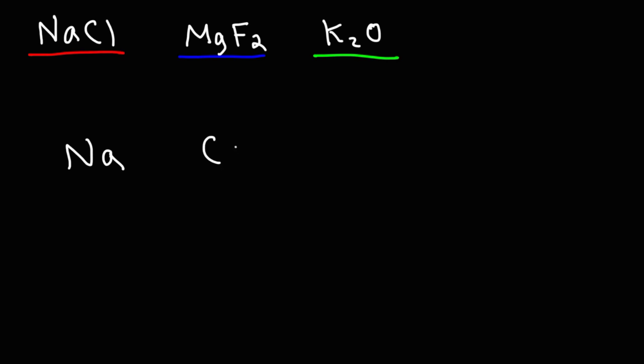First let's start with the sodium and chlorine atoms. Sodium is a metal with one valence electron. Chlorine is a nonmetal with seven valence electrons.